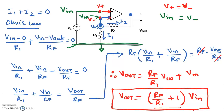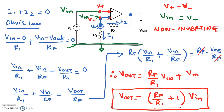Because of this, this particular op-amp configuration is called the non-inverting amplifier configuration.